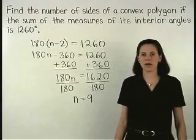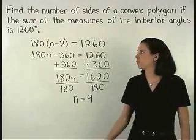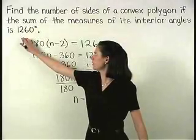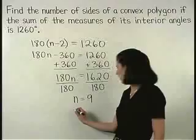So if the sum of the measures of the interior angles of a polygon is 1260 degrees, then we know that the polygon has nine sides.